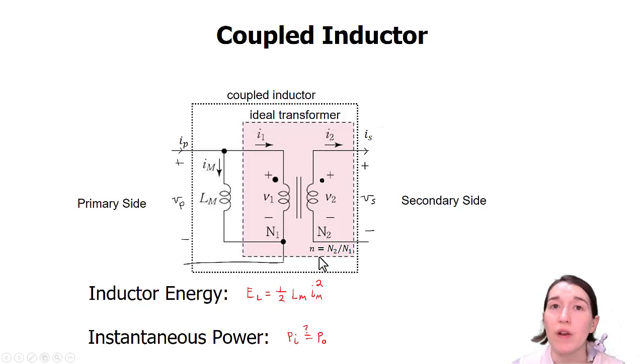And usually in one phase, there will be current going into one side and charging up the magnetizing inductor. And then it will be coming out of the other side during the second phase.